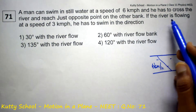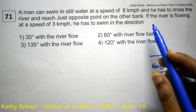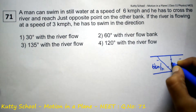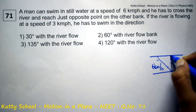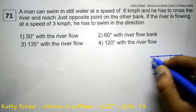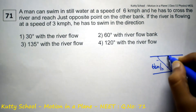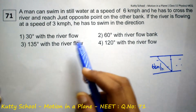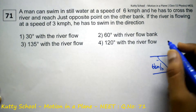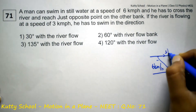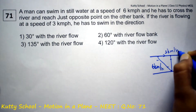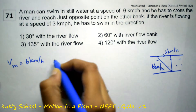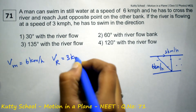He has to cross the river and reach just the opposite point. To reach the opposite point, he cannot go straight in that direction because the river is flowing in that direction. If the river is flowing at a speed of 3 km per hour, velocity of man is 6 km per hour and velocity of river is equal to 3 km per hour.